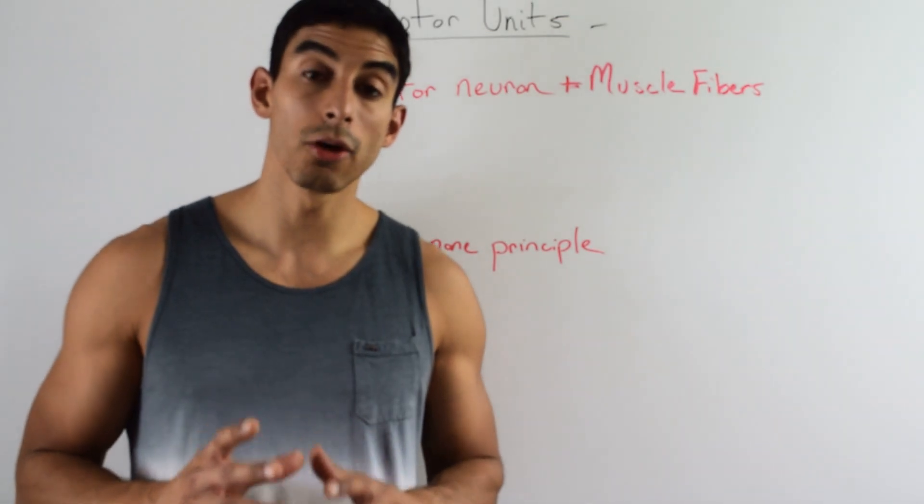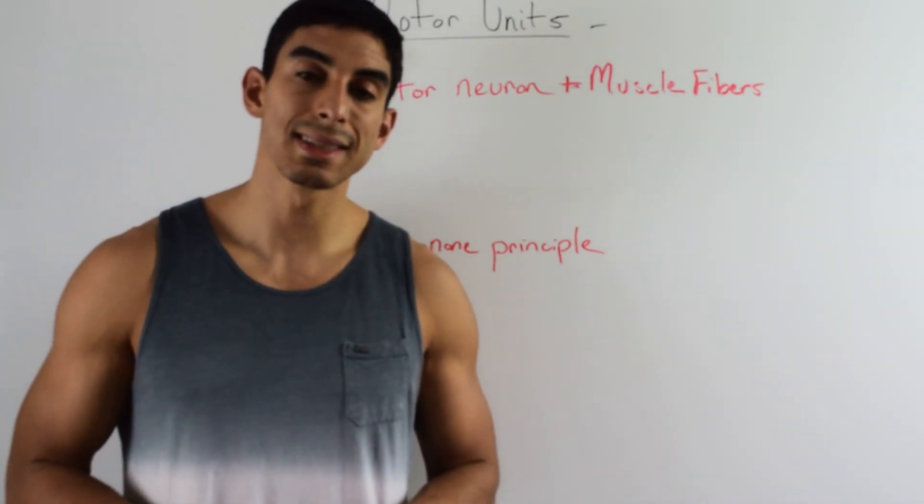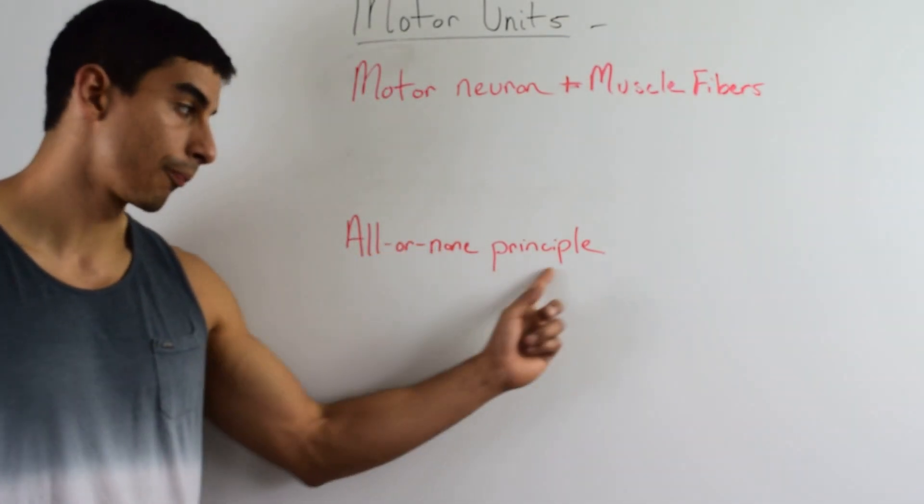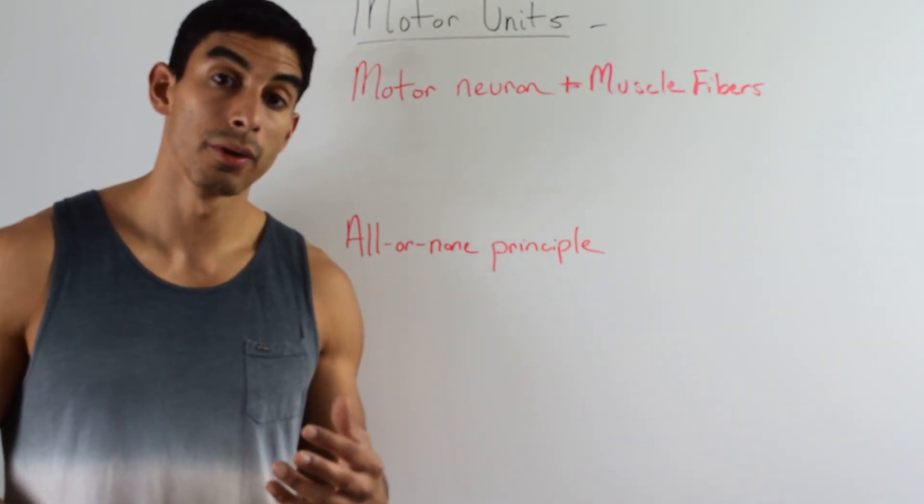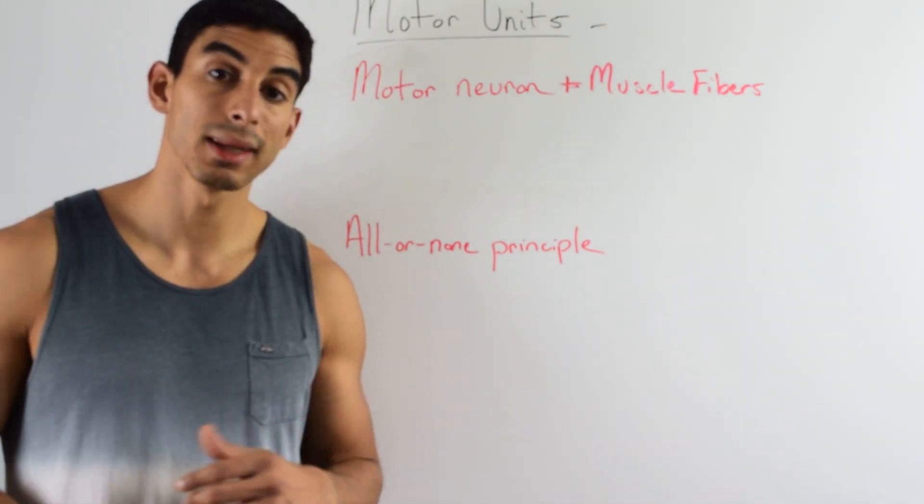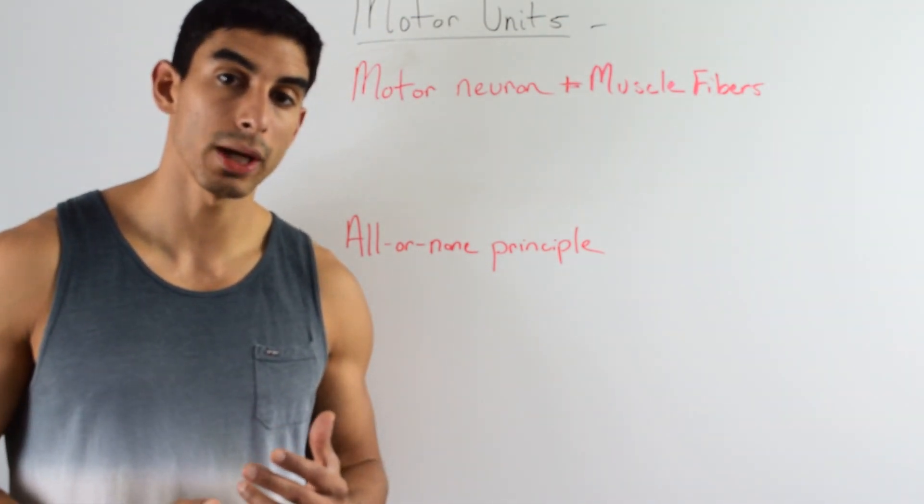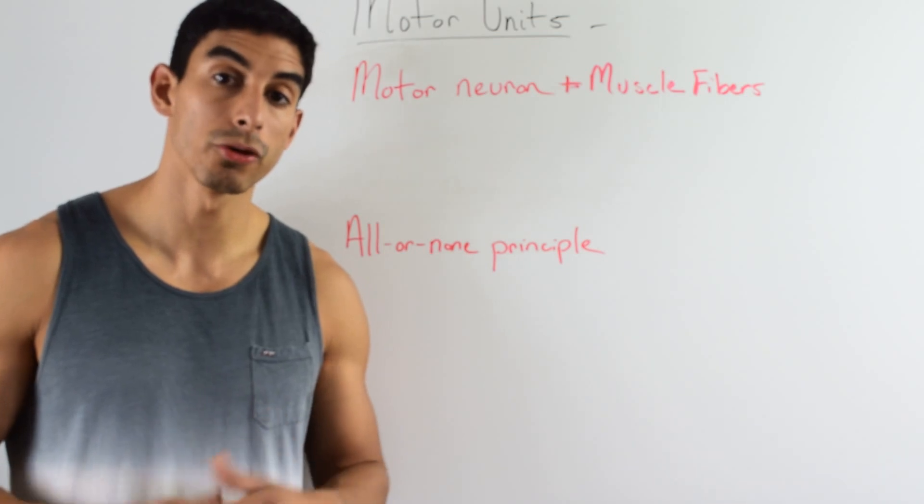Another thing you're going to need to know about motor units is this all-or-none principle. What you need to know about this is when one muscle fiber is signaled to contract, the entire motor unit contracts. You cannot contract part of a motor unit.